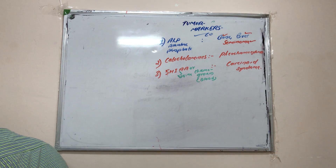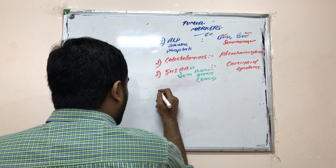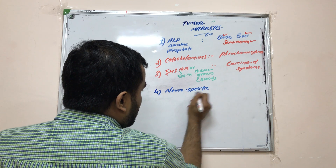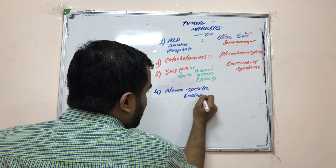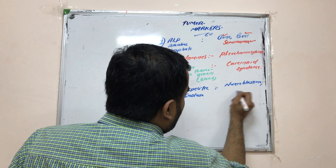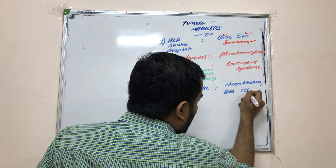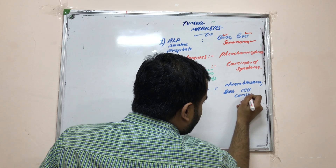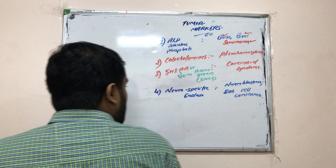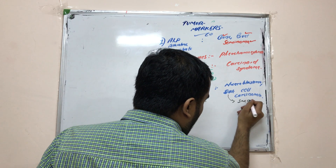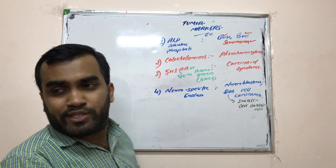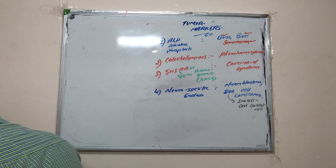Neuro-specific enolase (NSE) is seen in neuroblastoma and also in oat cell carcinoma. Oat cell carcinoma is very dangerous and is also known as small cell cancer.